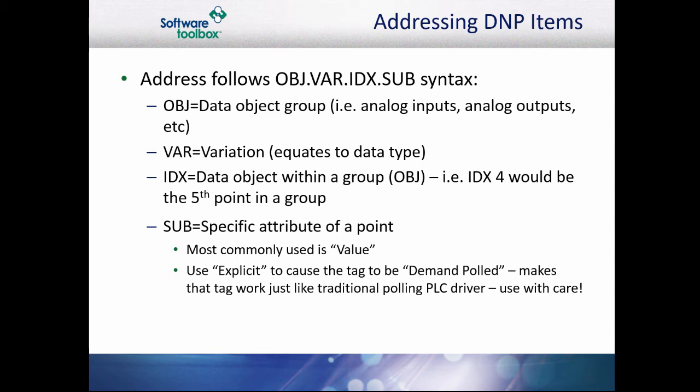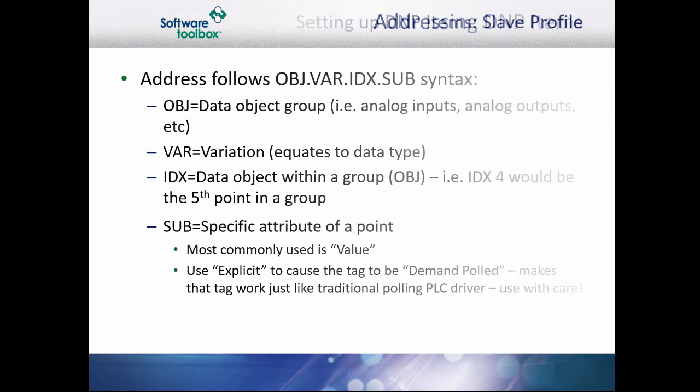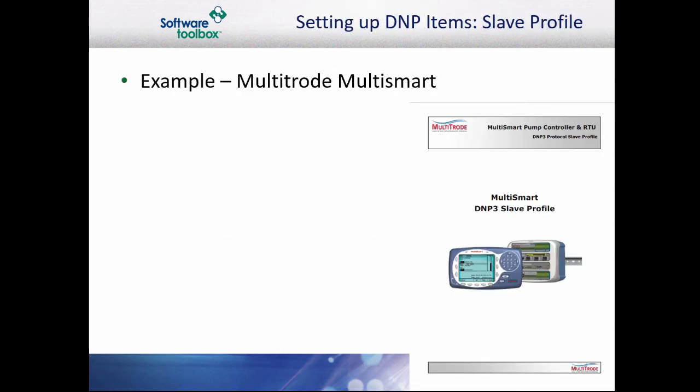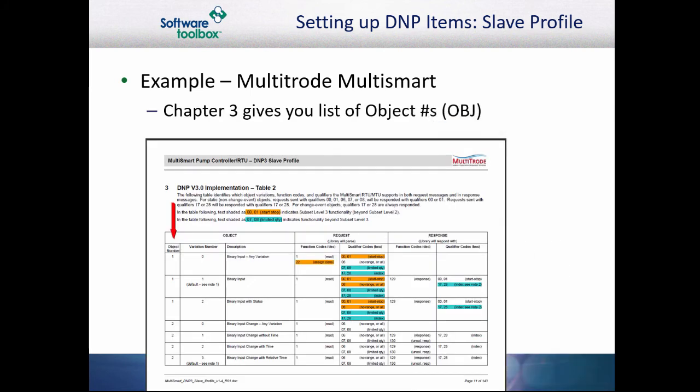When setting up DNP3 tags, it is essential to have the DNP3 slave profile document for your device. This will let you know what the DNP3 addresses are used for, what event class they belong to, and how to access them. Here is an example of a slave profile from a Multitrode MultiSmart pump controller. Chapter 3 lists the object numbers, the various available variations, and their descriptions.